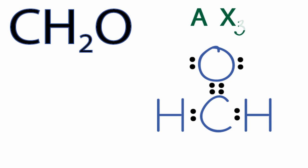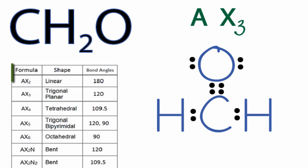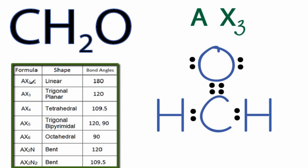You could have memorized that AX3 is trigonal planar, or you could look it up in a table if you have one available. As we go down our table, we see AX2, AX3, and that's what we want. AX3, trigonal planar with bond angles of 120 degrees.